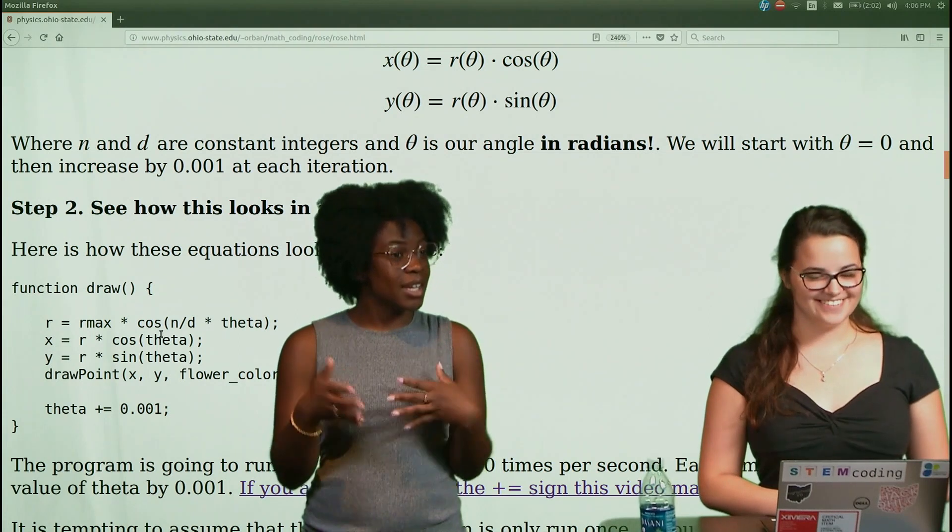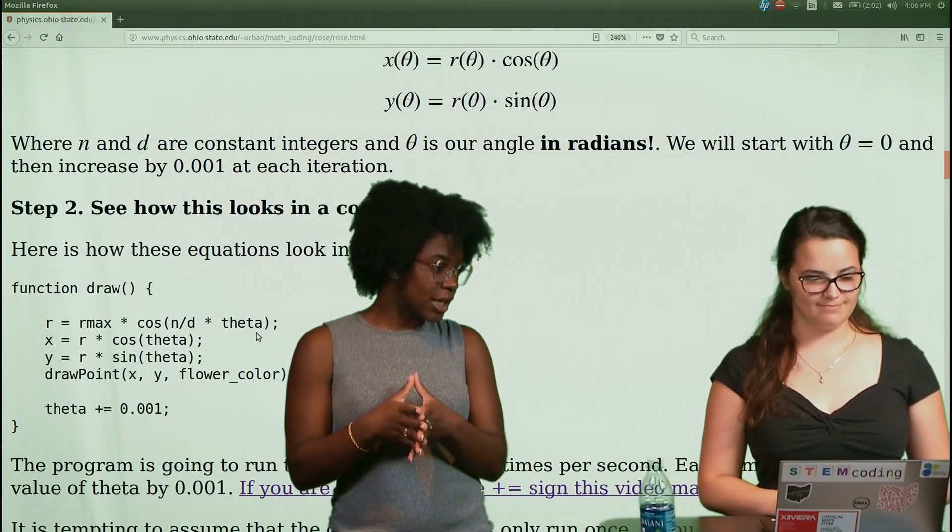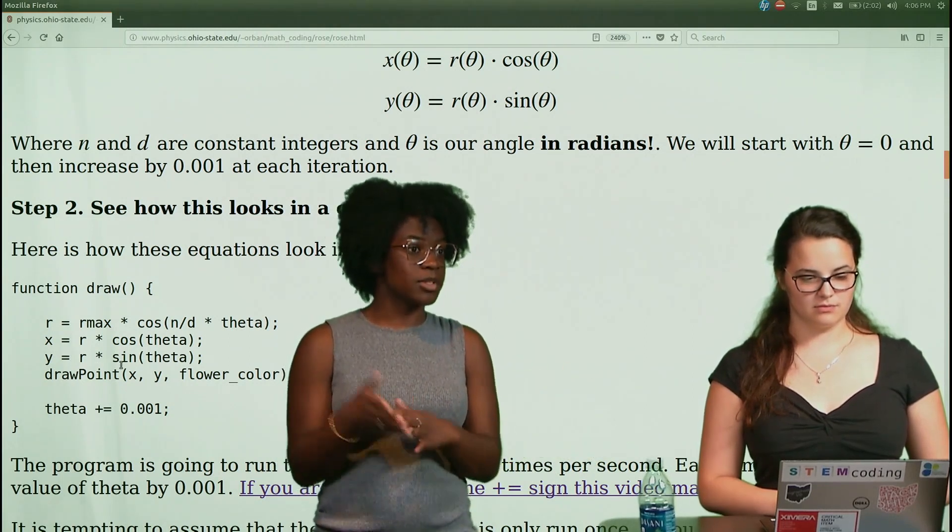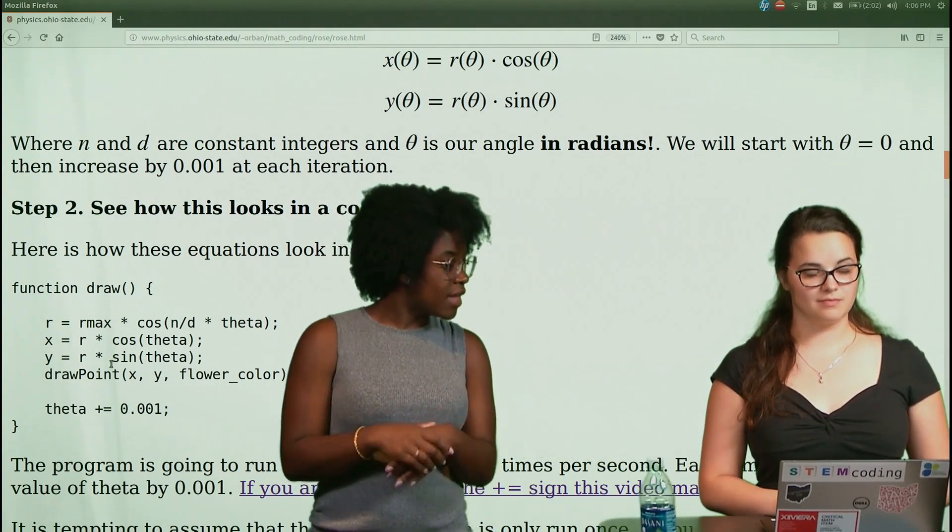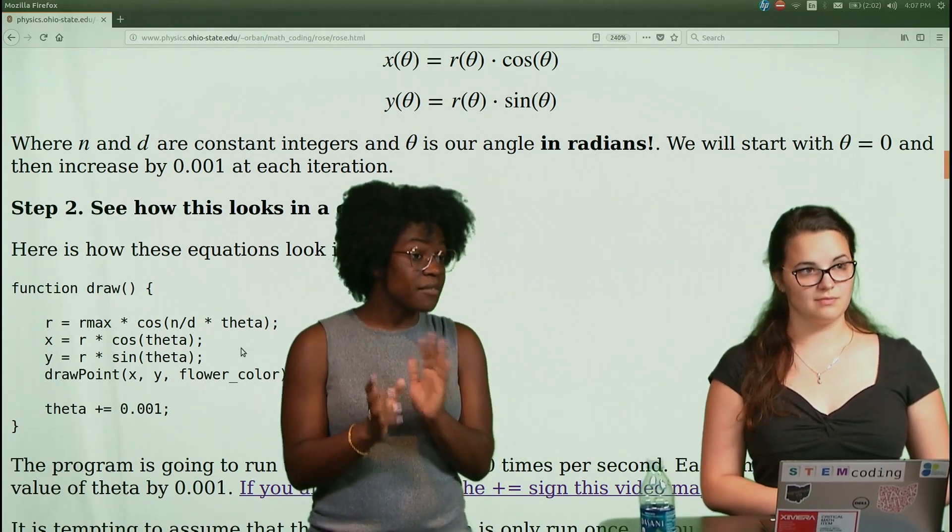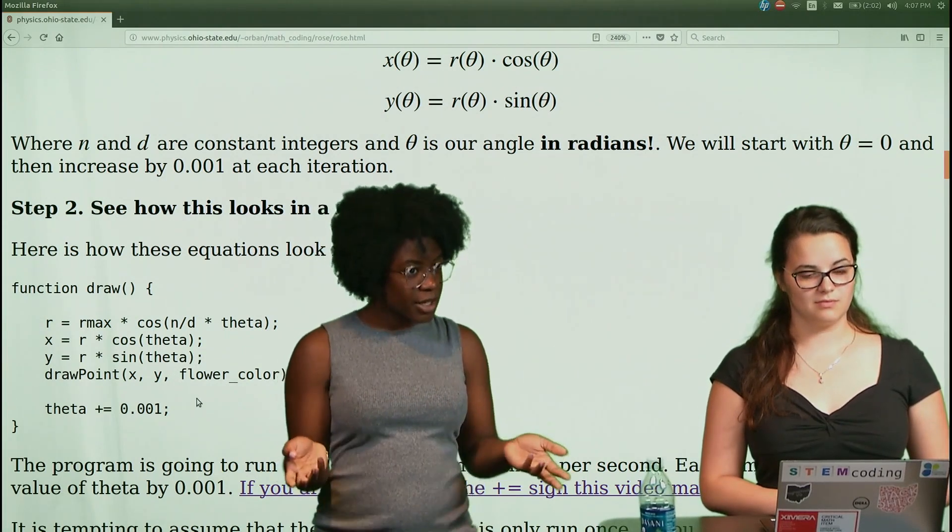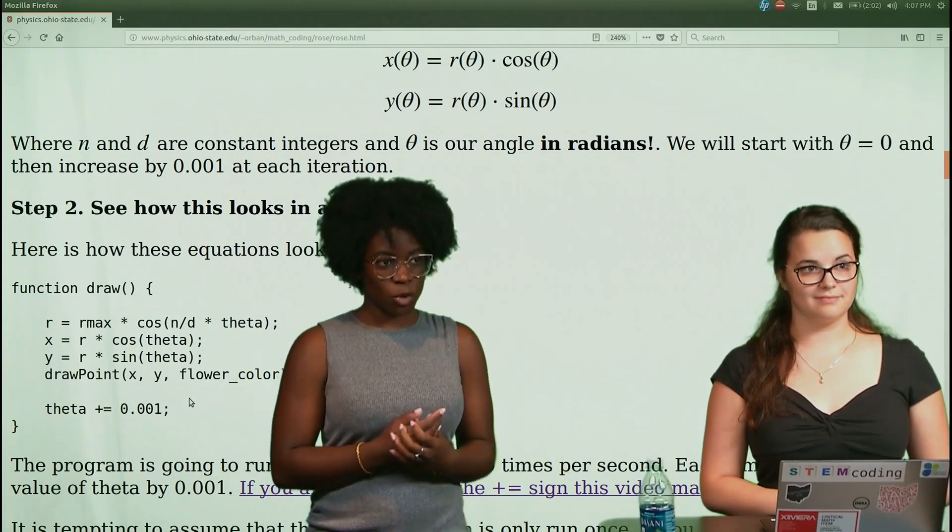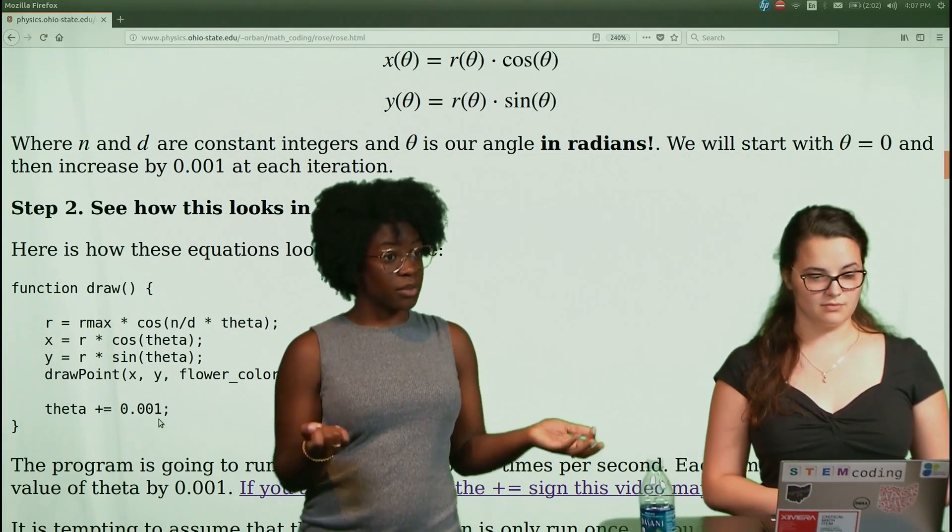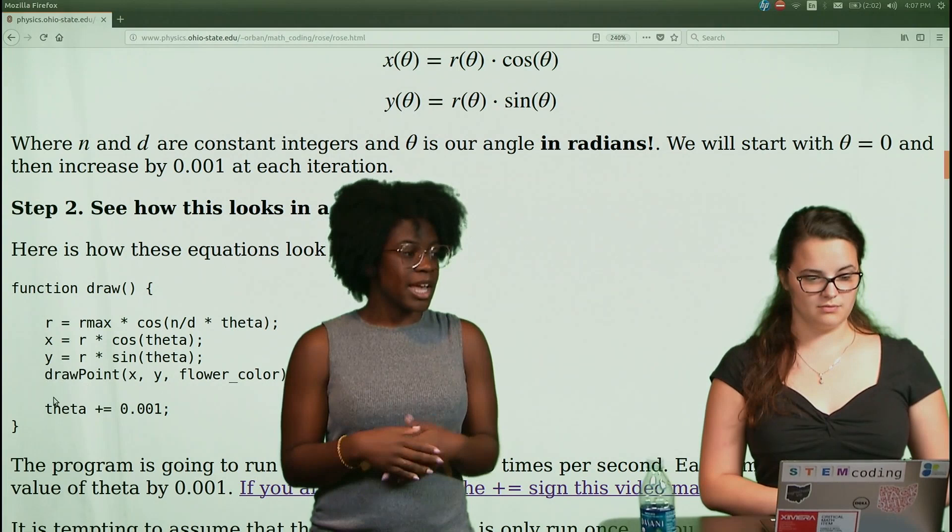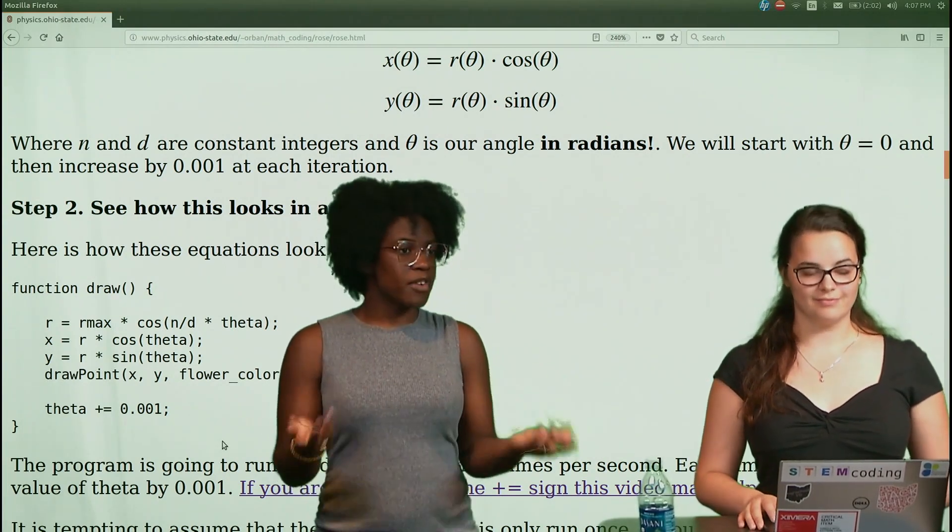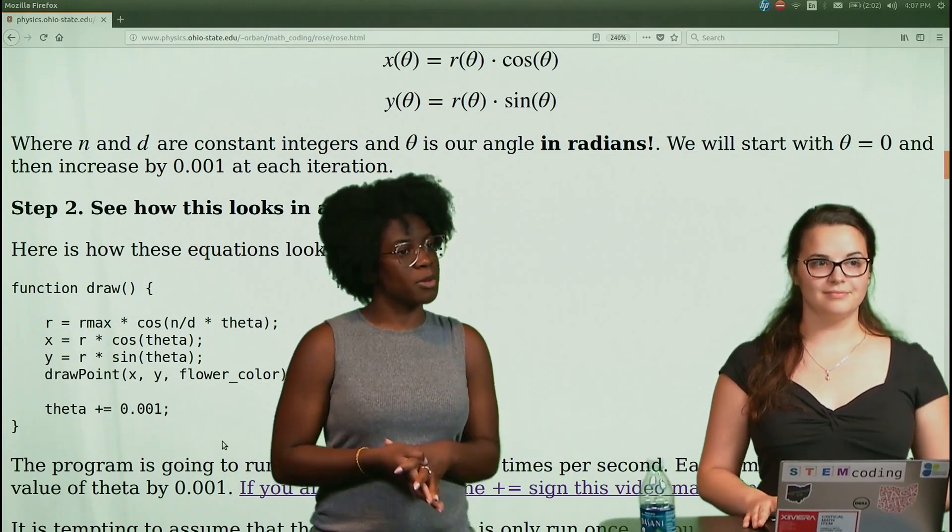And then once we get our R value, we're going to use that to calculate our X and our Y values, which again, the X and Y is just using cosine and sine, which is also discussed earlier. And then our draw point function is going to draw actual individual points of X and Y, which will turn out to be a flower. It may look like a line, but it's actually individual points, which we're going to show later how to make it look like that. And then lastly, we have our theta value that every time it calculates theta, it will add 0.01 or it can add 0.05, however much you want it to go.